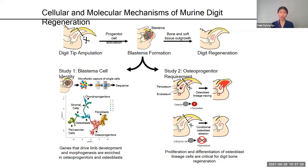You may be wondering where these osteoprogenitors come from, and how they might contribute to digit regeneration over time. To answer this, I tracked the location and behavior of osteoblast lineage cells. Before amputation, I labeled the cells in the periosteum, endosteum, and the bone marrow. After amputation, the periosteal and endosteal cells proliferated and differentiated into osteoblasts to form the new digit bone. A few even became fibroblasts, indicating some level of cellular plasticity.